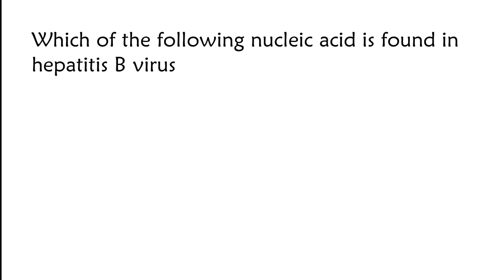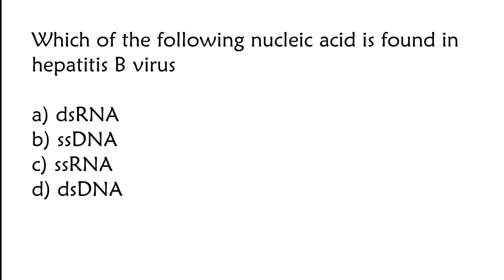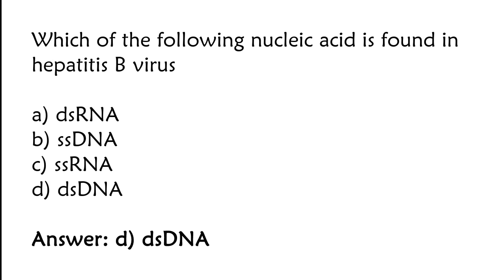Which of the following nucleic acid is found in hepatitis B virus? dsRNA, ssDNA, ssRNA, or dsDNA. The correct answer is option D. dsDNA nucleic acid is found in hepatitis B virus.